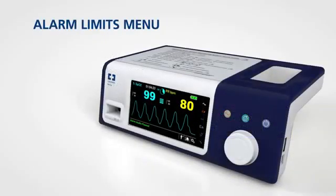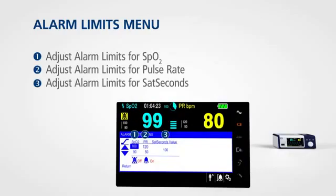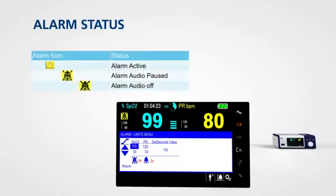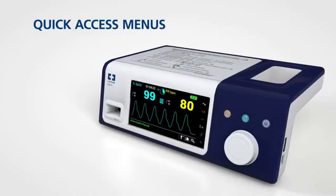To access the alarm limits menu, rotate the jog dial to highlight the alarm limits display area and press. From this menu, you can adjust the alarm limits for SPO2, pulse rate, and sat seconds. The alarm limits menu also allows you to silence audible alarms until the next power cycle. Colour icons show alarm status at a glance, and for quick access to alarm settings, rotate the jog dial to highlight one of the two areas and press.